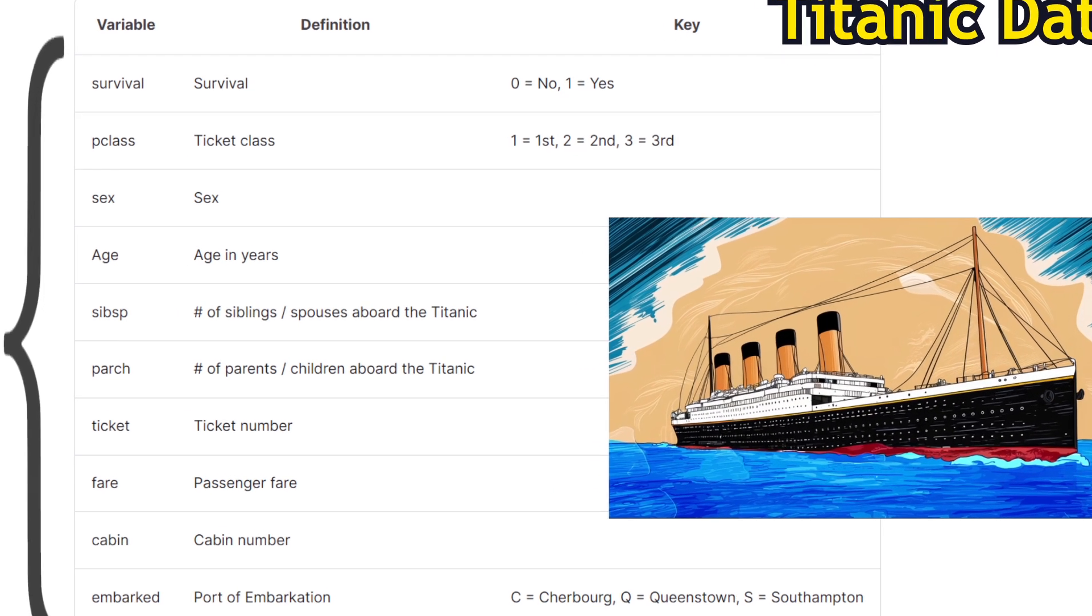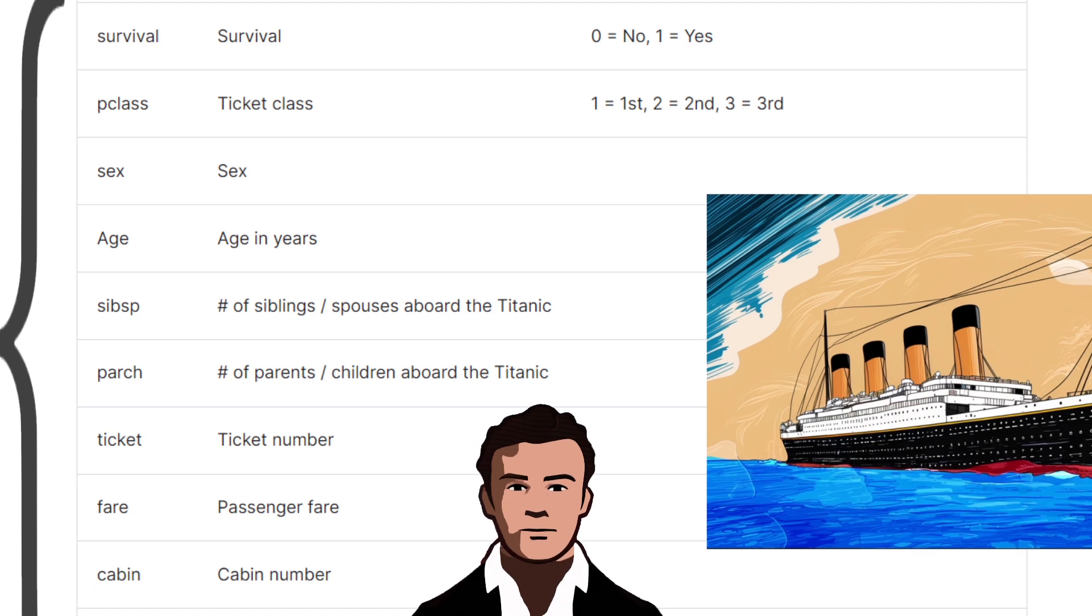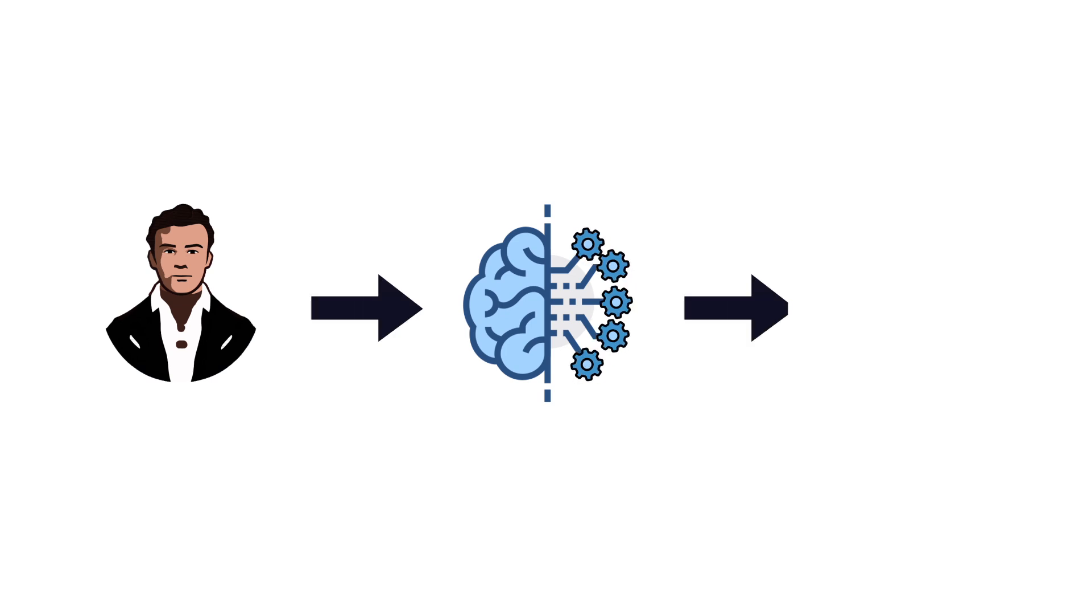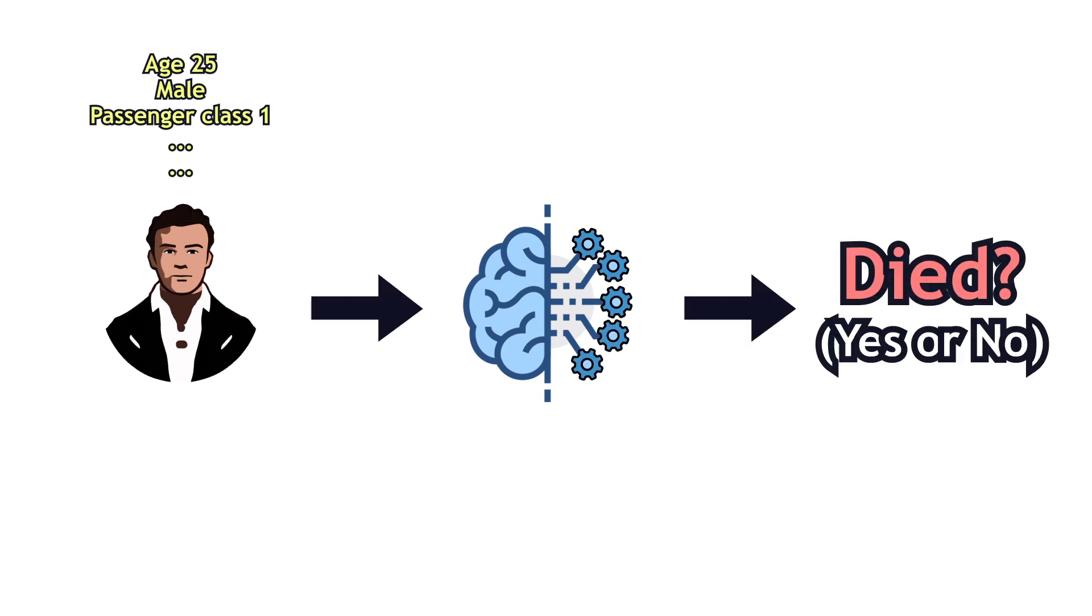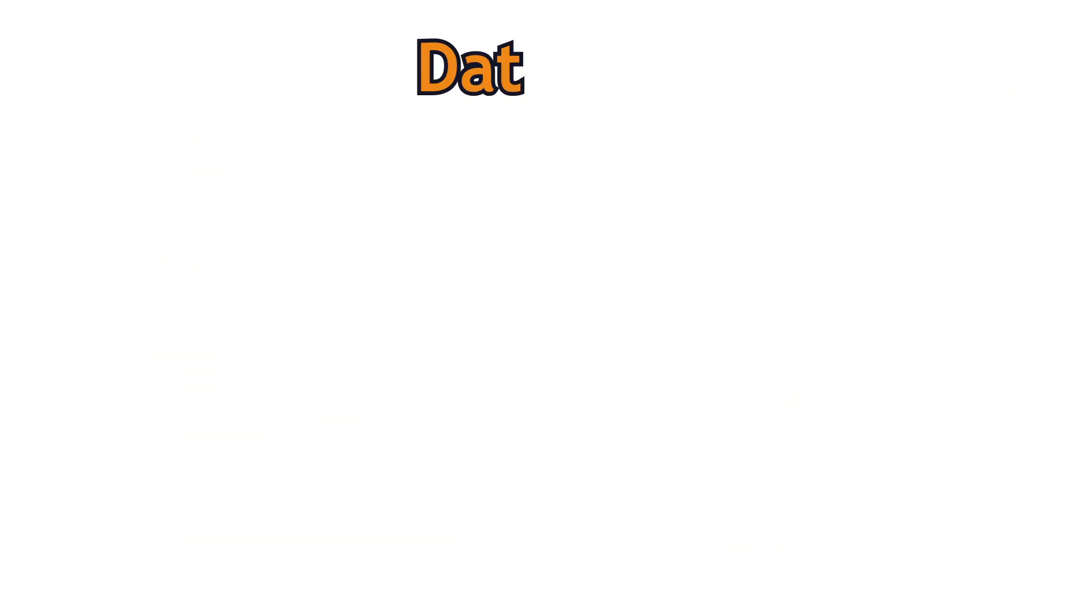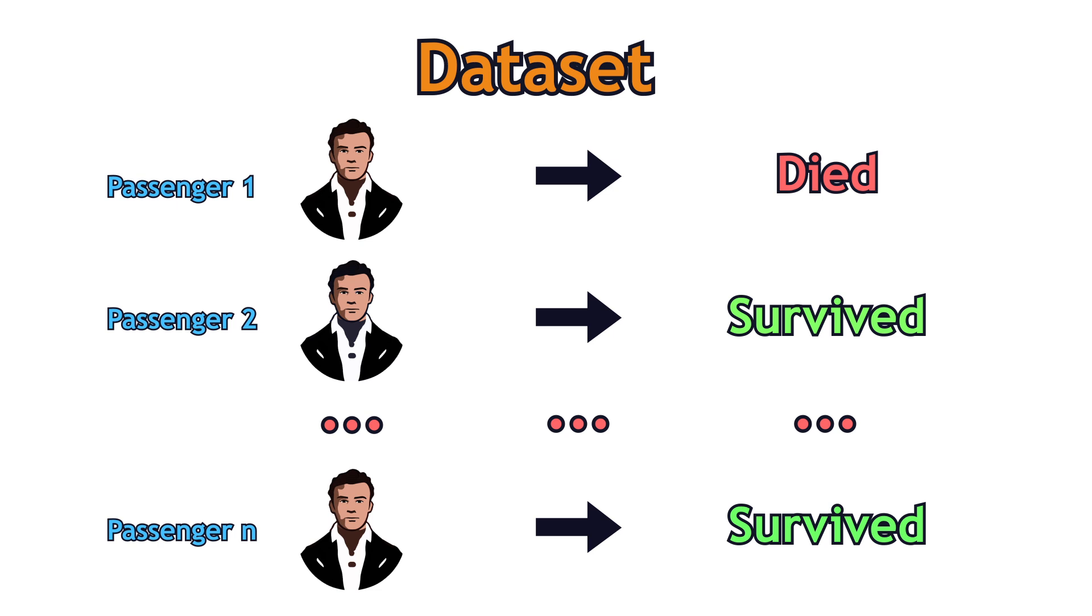For instance, the Titanic dataset contains the demographic and other information about each passenger, as well as whether one died or not. If we decide to train a machine learning algorithm that would predict if the person died or not, given his demographics, we should refer to the supervised models. That's because we have in our dataset the correct pairs from which the model can learn.